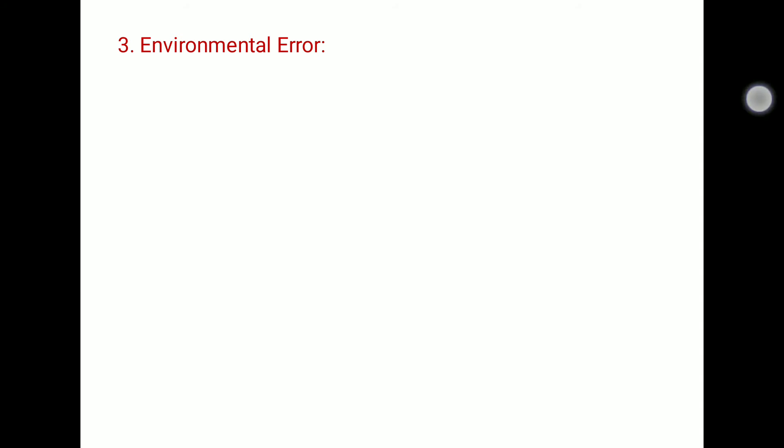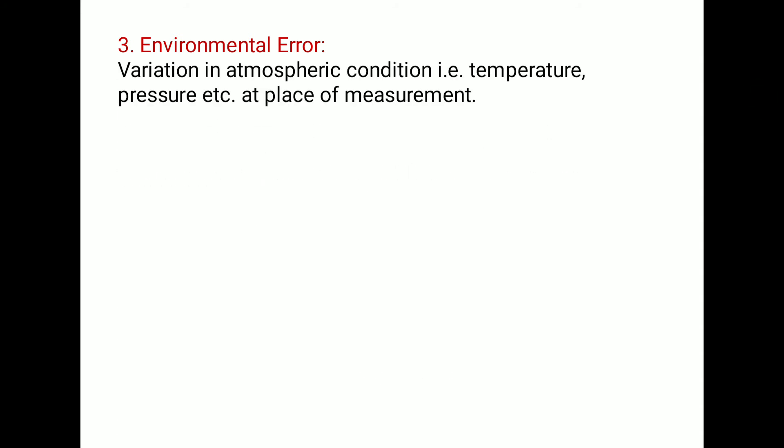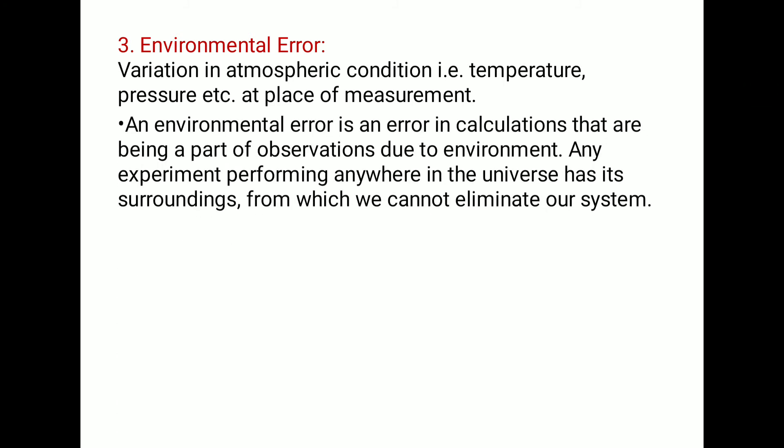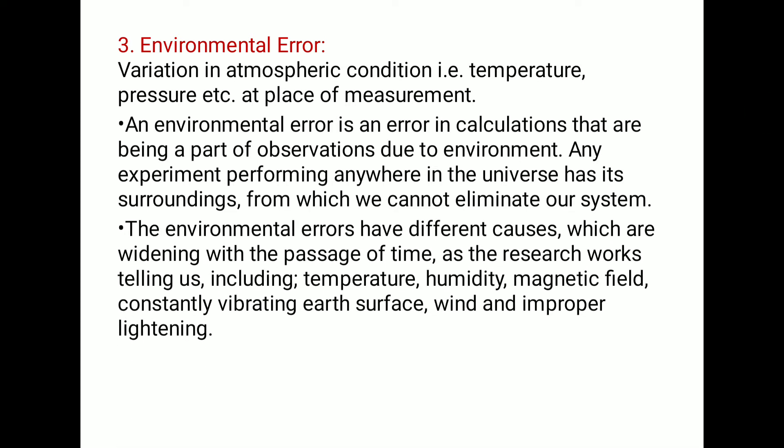The third type is environmental error. Variation in atmospheric conditions — that is temperature, pressure and other factors at the place of measurement — lead to environmental errors. An environmental error is an error in calculations that are part of observations due to the environment. The environmental errors have different causes including temperature, humidity, magnetic field, constant vibrations or surface wind, and improper lighting.